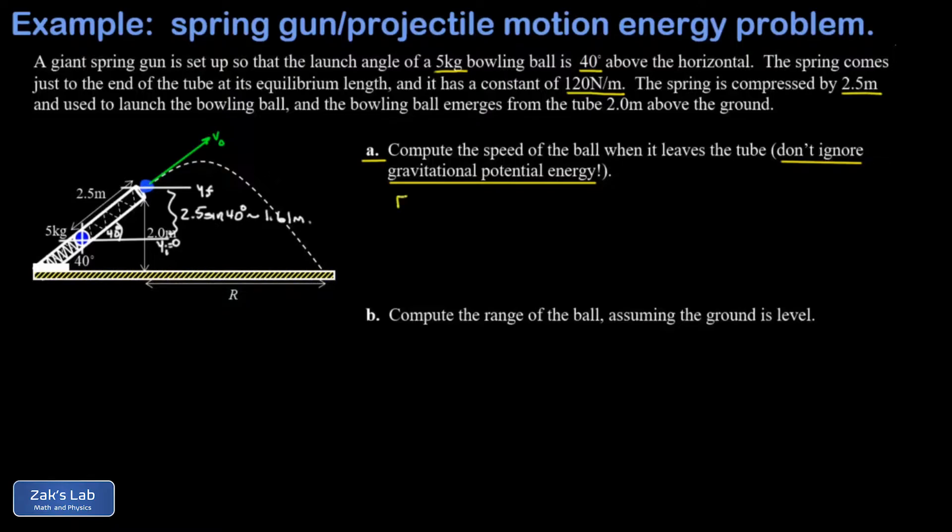So we write down our statement of energy conservation: E initial is equal to E final during the launch process. The initial energy, because I put the origin of coordinates at the initial location of the ball, the y coordinate is zero, so the gravitational potential energy is zero. And there's certainly no kinetic energy in the initial state. So the only energy in the initial state is the potential energy stored in the spring.